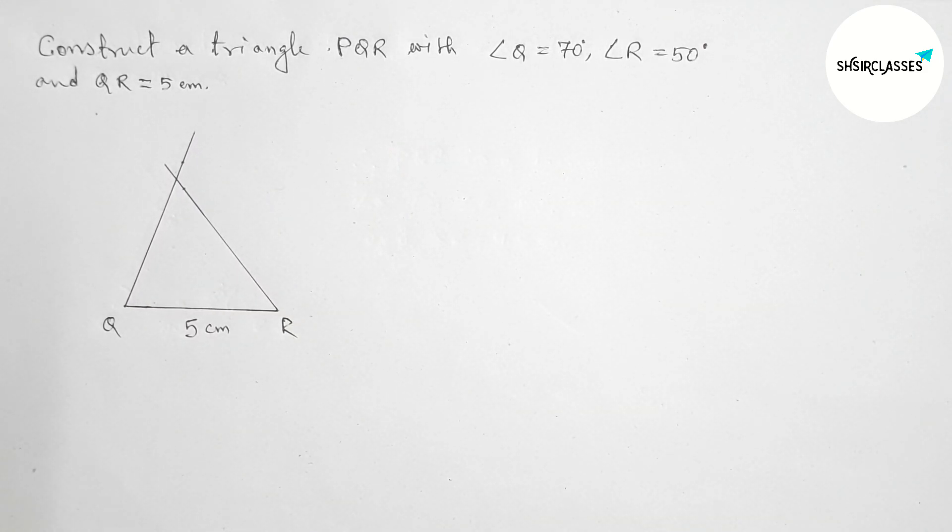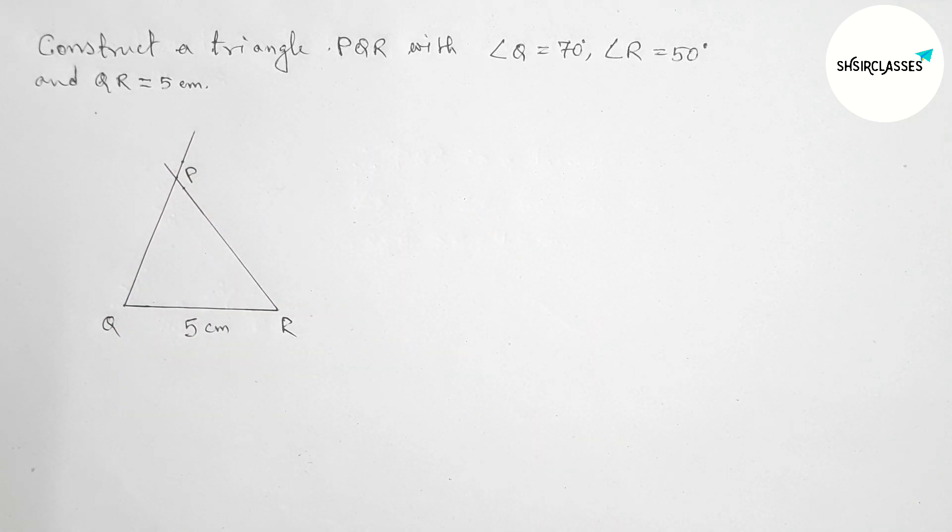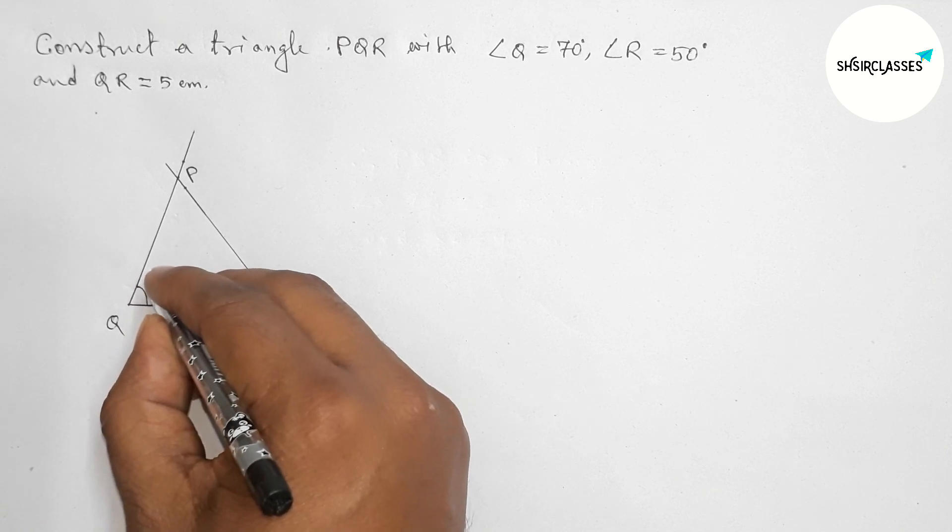So here both lines meet at a point. Taking this point as P, now angle Q is 70 degrees.